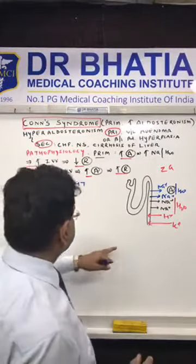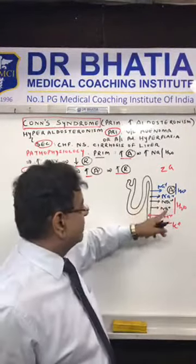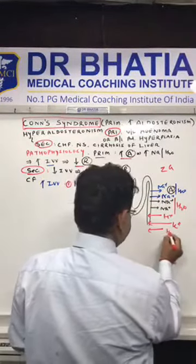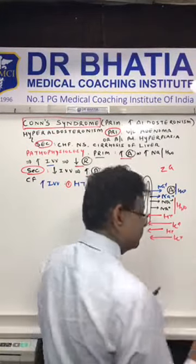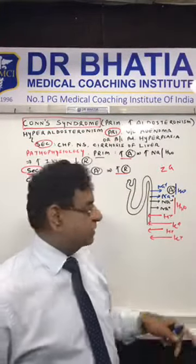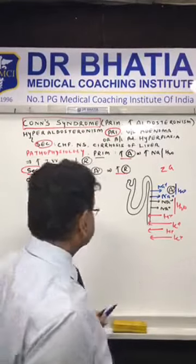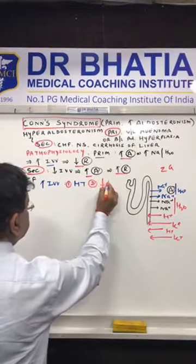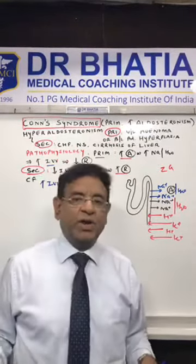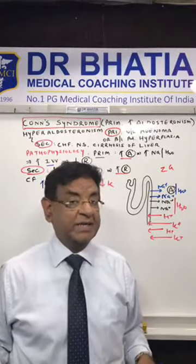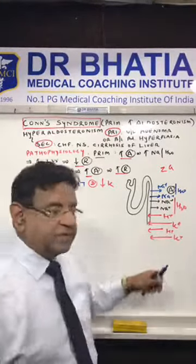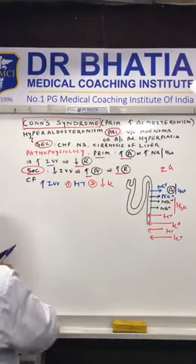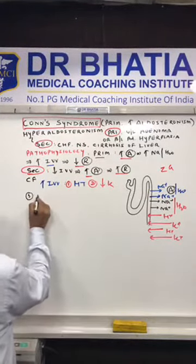Additionally, excess sodium comes in, and now the body has to excrete double H⁺ and double K⁺. Double potassium going out leads to hypokalemia — that is the reason why hypokalemia occurs in Conn's syndrome. Excess H⁺ going out leads to metabolic alkalosis.